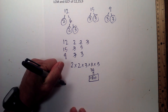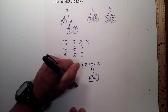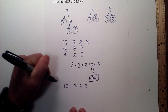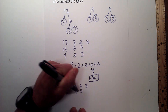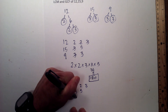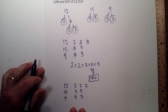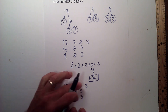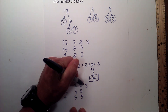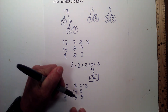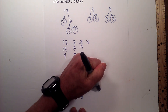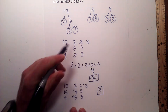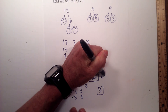Now, in order to find the greatest common factor, we take the same prime numbers: for 12 it's 2, 2, and 3; for 15 it's 3 and 5; and for 9 it's 3 and 3. I find the number or numbers that appear in all three, and in this case it's only 3. So the greatest common factor is 3.